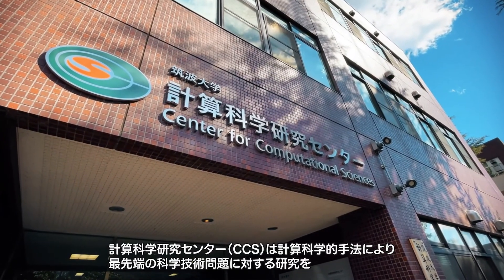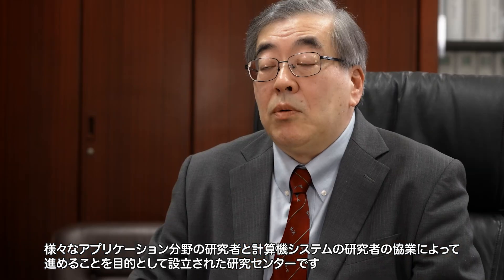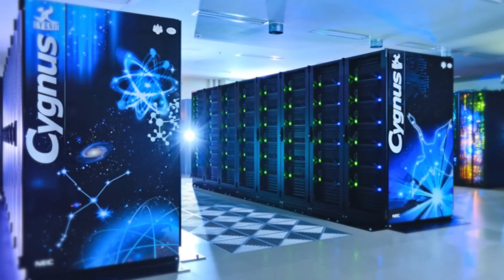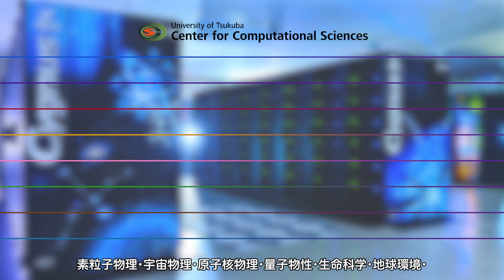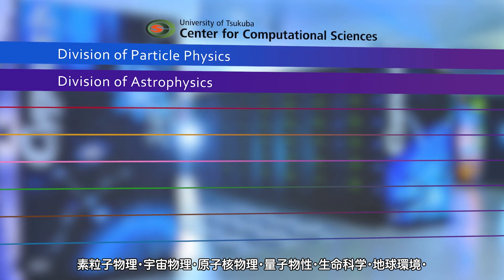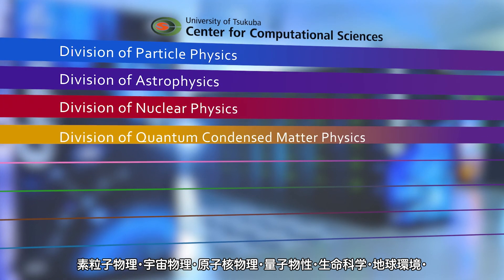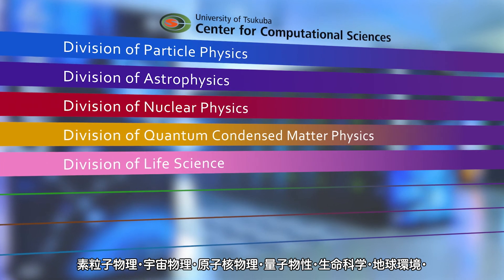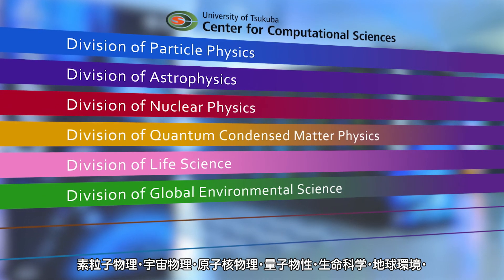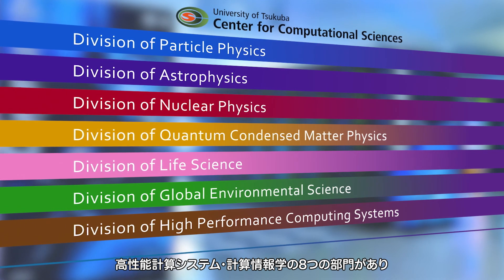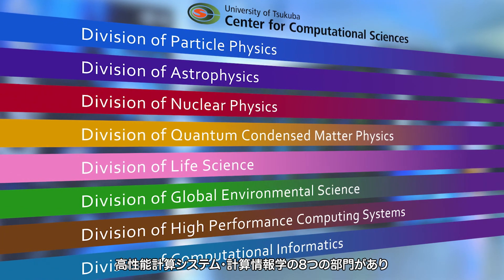The Center for Computational Sciences, or CCS for short, was established to provide a cooperative research field. Computational scientists and computer scientists work together for state-of-the-art scientific programs by advanced co-designing. We have eight research divisions on particle physics, astrophysics, nuclear physics, quantum condensed matter physics, life science, global environmental science, high performance computing systems, and computational informatics, supported by more than 40 faculty members.